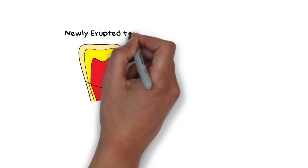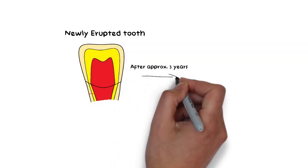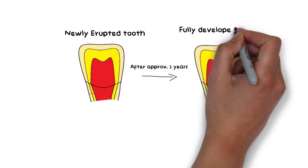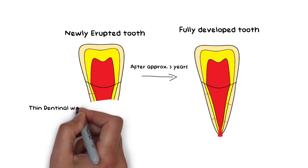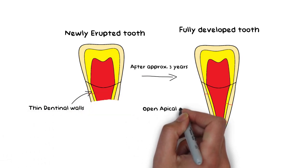After a tooth erupts into the oral cavity, it takes about three years for the root development to complete. Hence, the root of the tooth still has thin dentinal walls and an open root end.